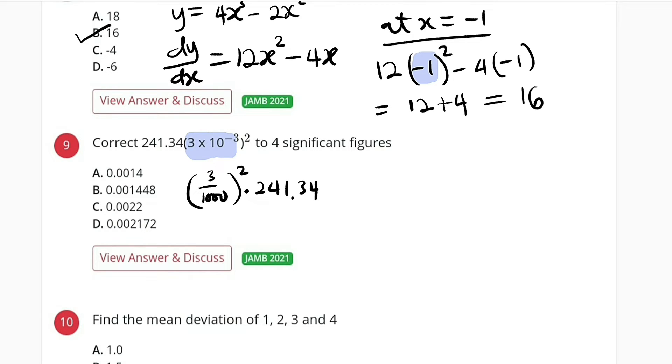which is 0.003. If you square that, it's like you are multiplying it by itself, which is the same thing as 0.000009. Then you multiply by 241.34, and that will give us 0.00217206.